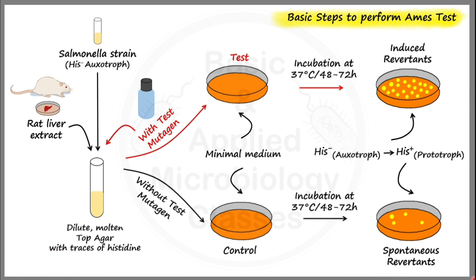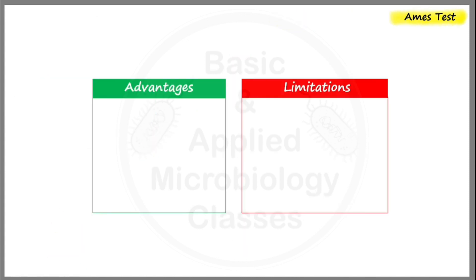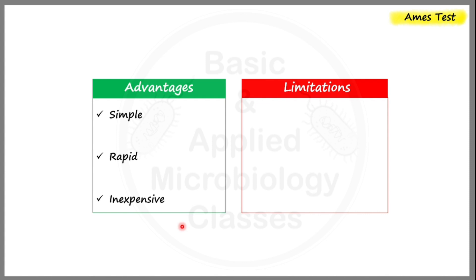Now let's conclude with the advantages and limitations of the Ames test. The Ames test is a simple, rapid, and inexpensive test for carcinogenic agent testing. Direct testing methods for carcinogenic agents make use of animals — they are costly and time-consuming. Compared to those direct tests, the Ames test, as an indirect test for carcinogen detection, is more advantageous.